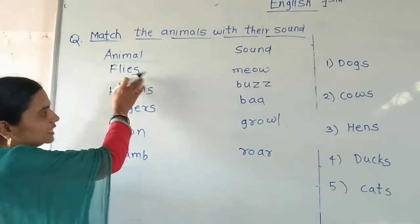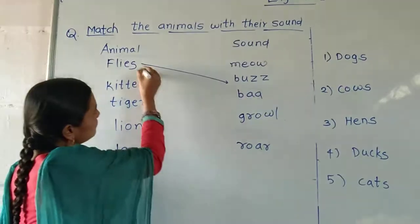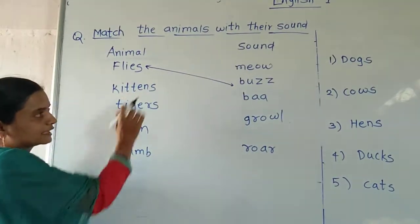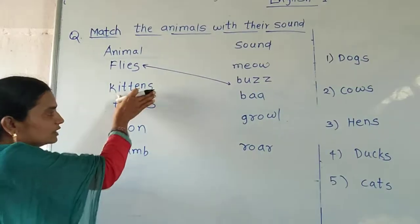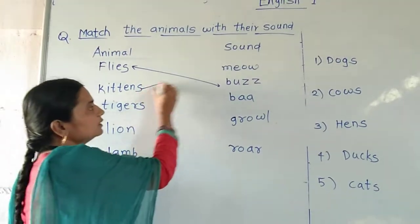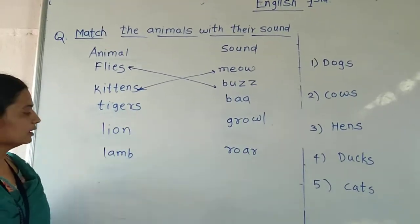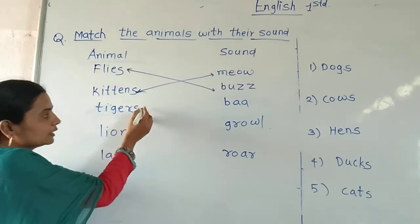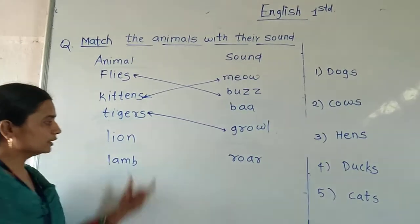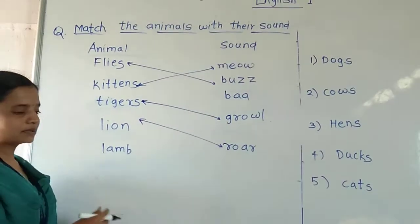First: flies. What are flies? Birds. Flies means a machine — birds. Then kittens. Kittens means manchari, the young ones of a cat. It's called kittens. Then tiger. The sound of tiger is roar. Then lion. Then lamb.